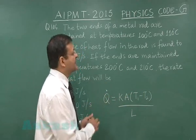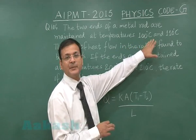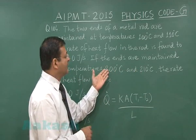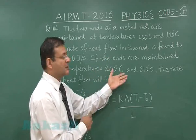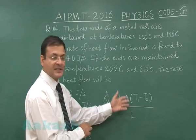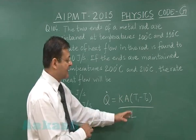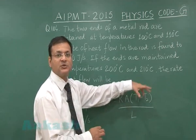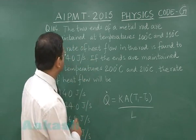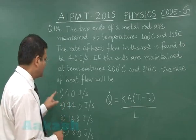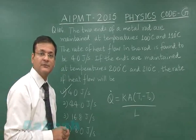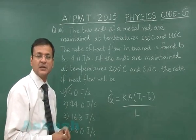The key observation is that the temperature difference is 10°C initially (110 − 100), and the new temperatures 200°C and 210°C also give a difference of 10°C. Since ΔT has not changed and all other quantities (k, A, L) remain the same, the heat flow rate remains 4 joules per second. Marking option 1 as the answer for question 104. Moving to question 105.